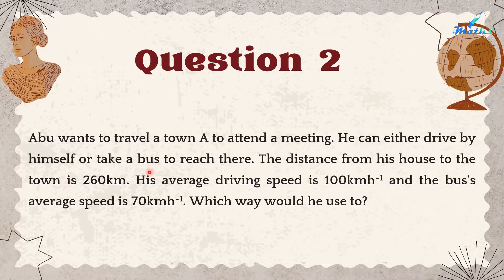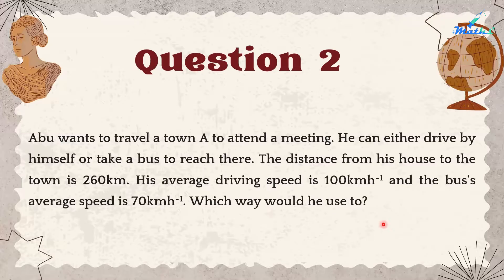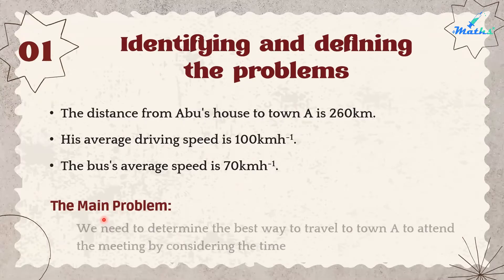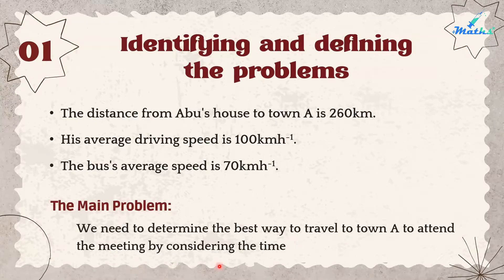For Question 2: Abu wants to travel to a town to attend a meeting. He can either drive by himself or take a bus. The distance from his house to the town is 260 km, his average driving speed is 100 km/h, and the bus average speed is 70 km/h. Step 1 — The main problem is to determine the best way to travel to town for the meeting by considering the time taken.